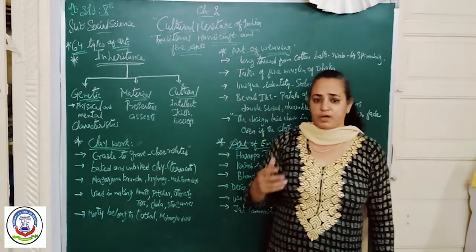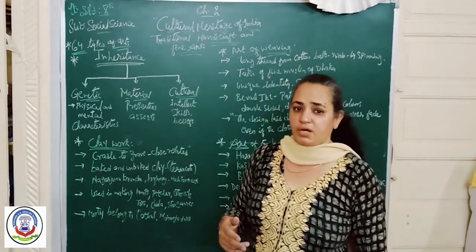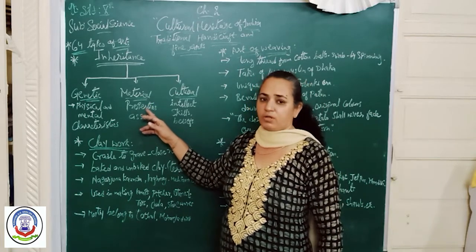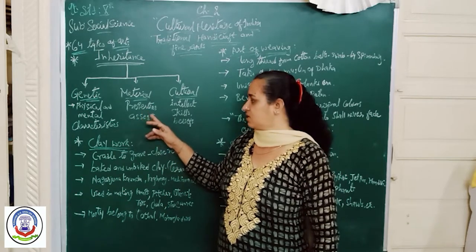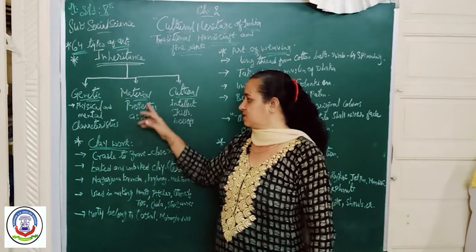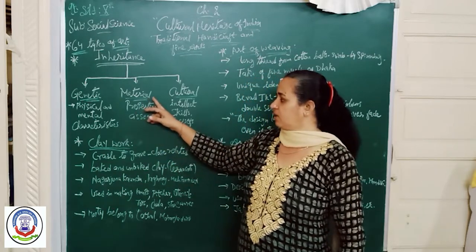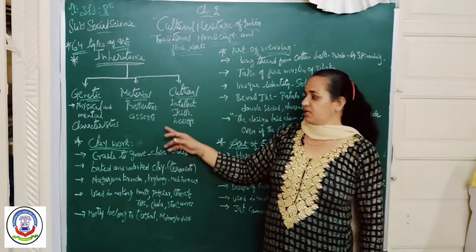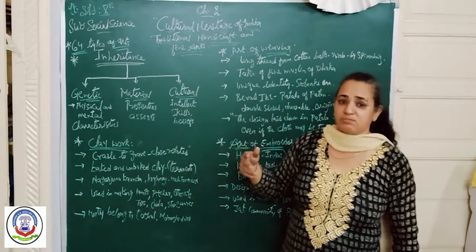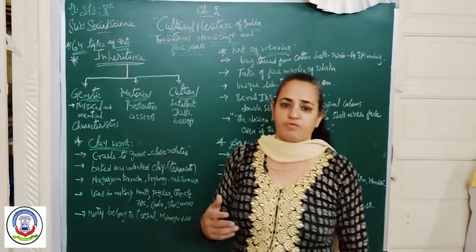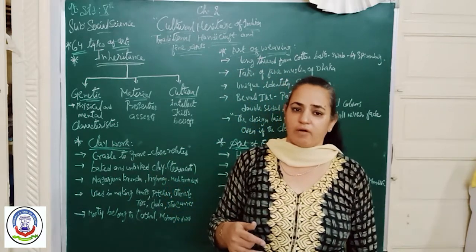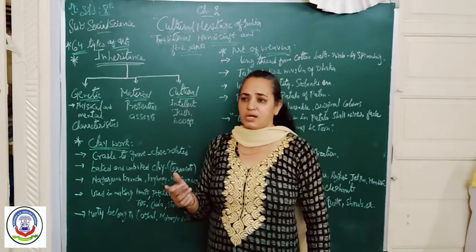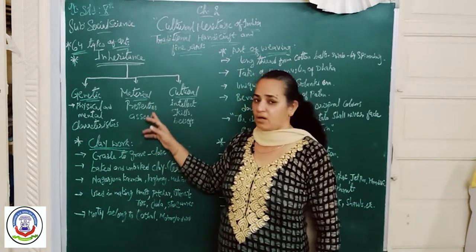Material inheritance means the properties and assets which our forefathers left for us — things they created and built for us during their lifetime and business. It contains properties, assets, and liabilities. Liabilities means the things which we have to pay. When our forefathers died and left behind their business, in that business we have some assets and some liabilities — that is, amounts we have to pay to some persons. All these things are known as material inheritance.